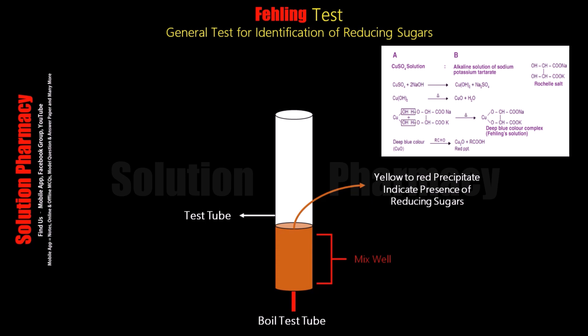The principle is that if reducing sugar is present in the sample solution, it will reduce the copper sulfate present in the reagent. This reduction of copper sulfate takes place in the presence of reducing sugar, and copper sulfate is then converted into cuprous oxide, which is observed as a brick red color precipitate. This is the principle of Fehling's test.